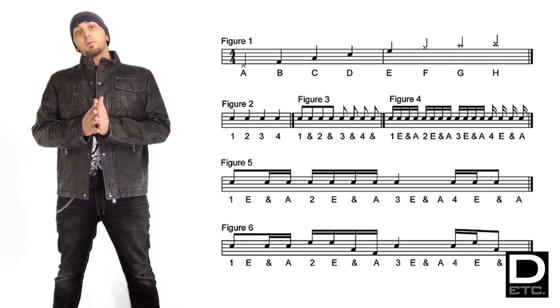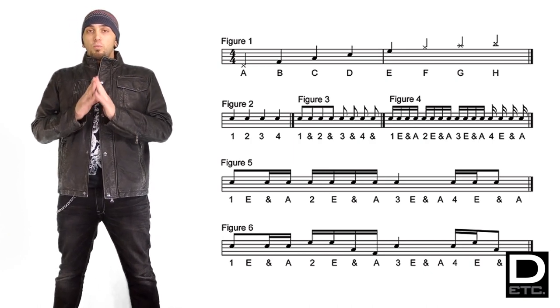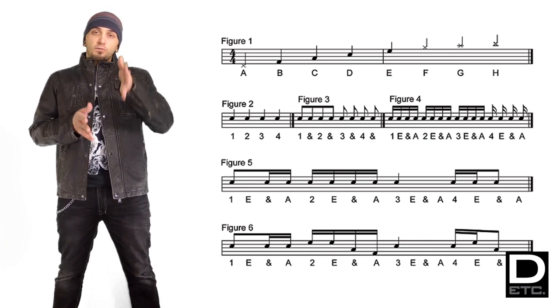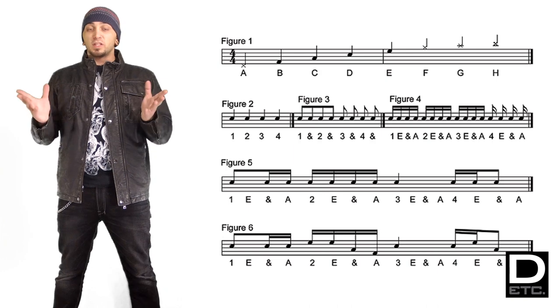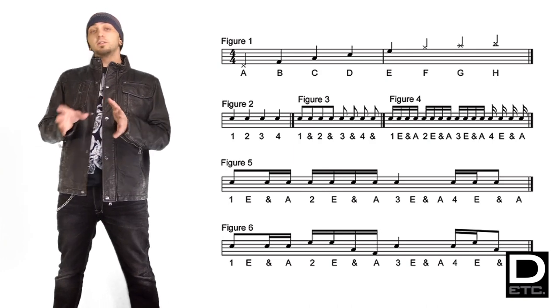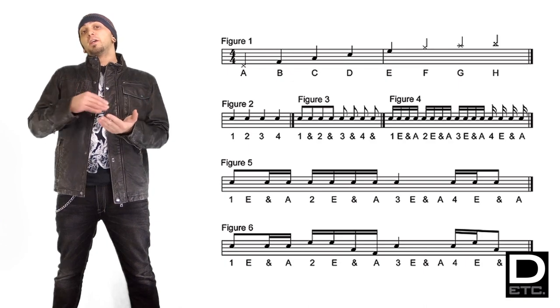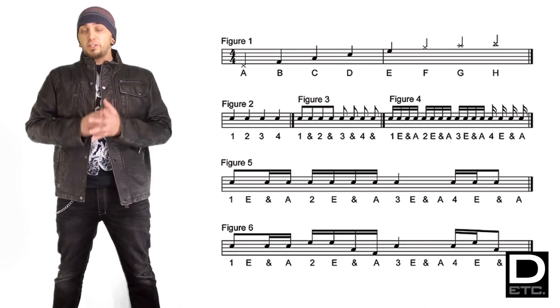The first thing we're going to talk about is what the notes on the staff mean. When I say staff, I'm talking about those five lines and four spaces that you see, that probably just look like nothing. There's going to be a bunch of dots and X's across these, and I'm about to demonstrate what each of these mean.